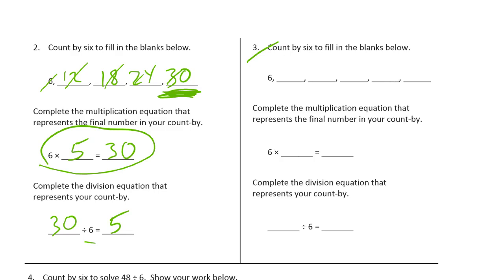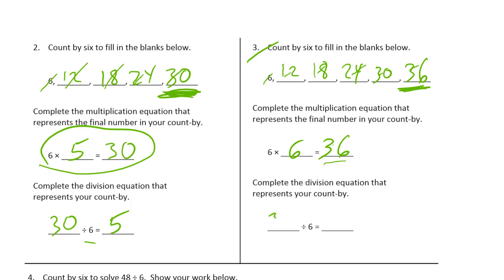Number three: count by six to fill in the blanks — same as before but now we have one more six. Complete the multiplication equation: thirty-six is our product, and that's one, two, three, four, five, six — six sixes, so six times six equals thirty-six. For the division equation, our product becomes the dividend, the divisor is six, and the quotient is six.